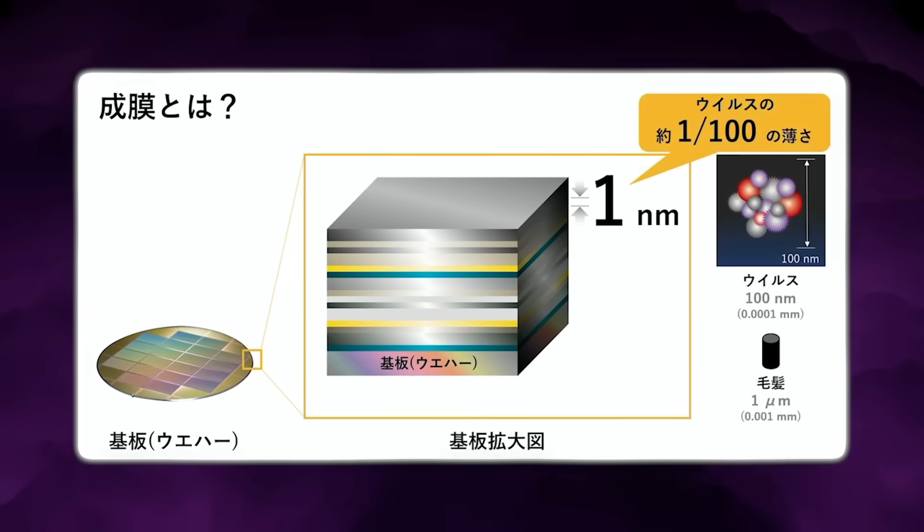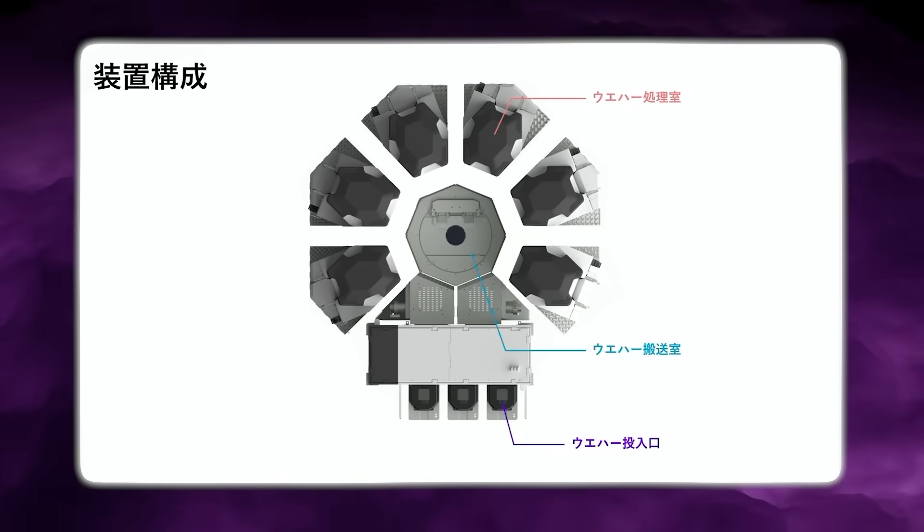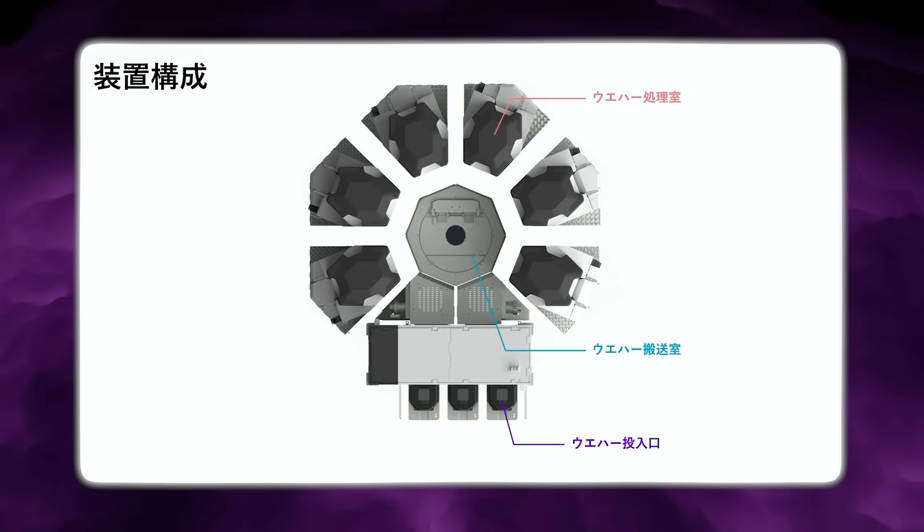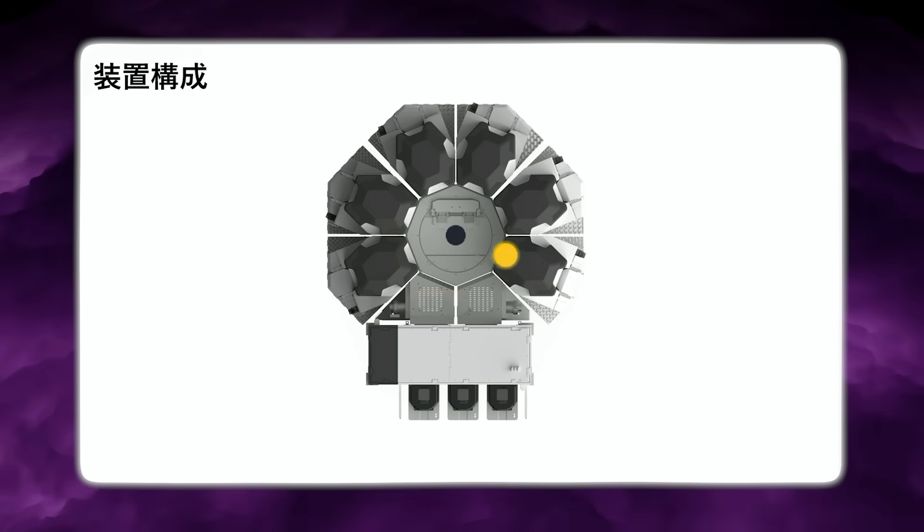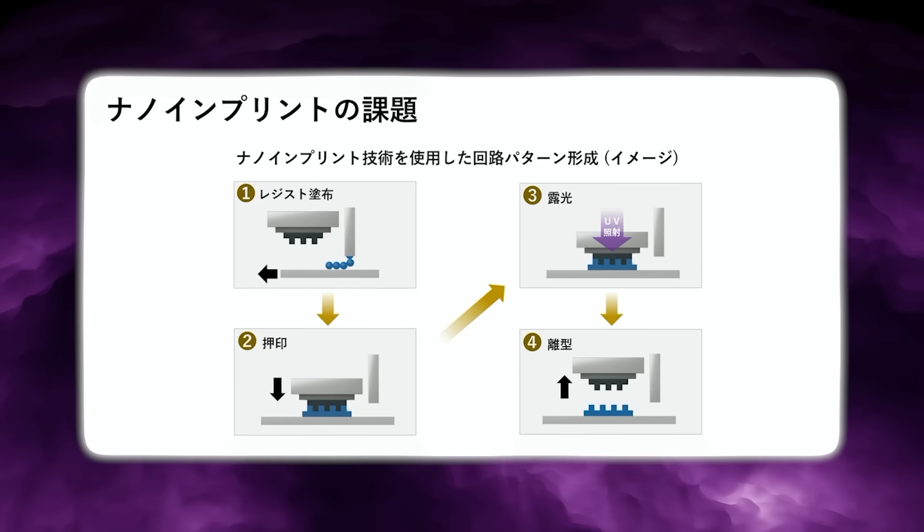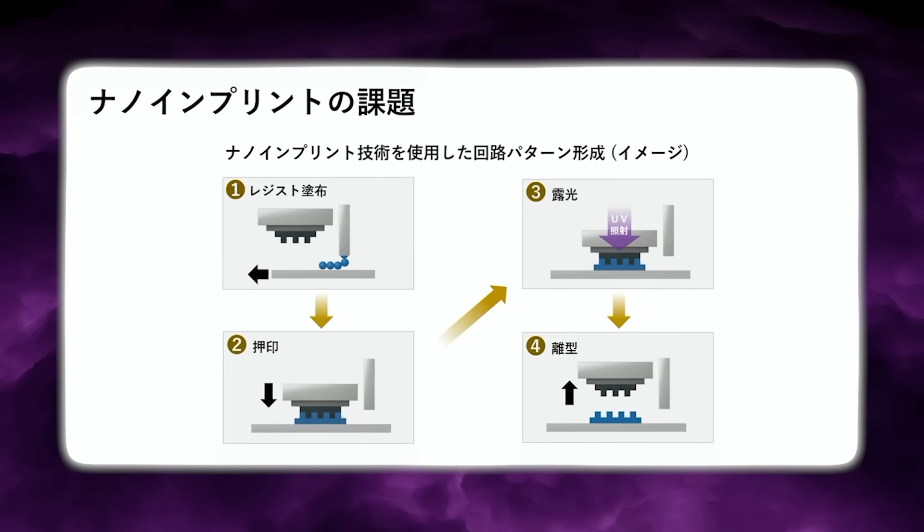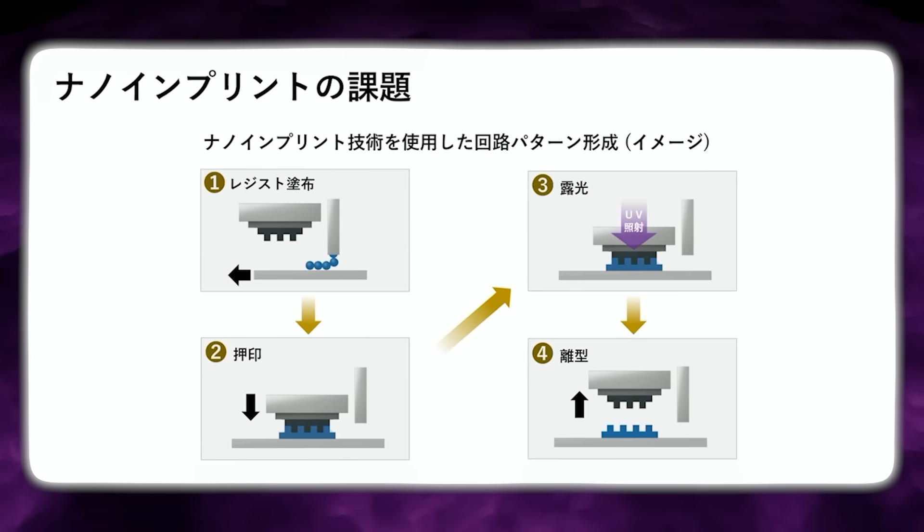So if NIL is to compete, it will need to accelerate production capacity, increase lifetime of molds, improve particle and debris management, and boost throughput. Now, due to constraints of ASML chips, DNP is rising. But it does not claim nanoimprint replaces EUV. Instead, it states that its new NIL template can partially replace EUV in selected patterning layers of advanced logic chips.